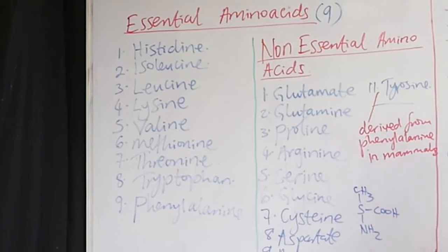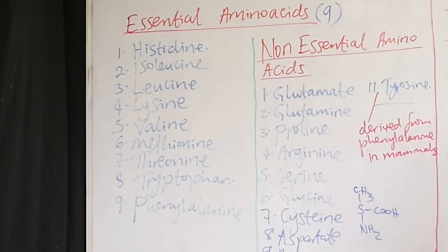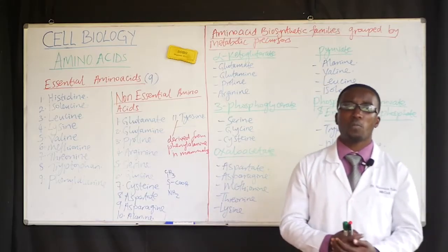We have the tertiary structure, where polypeptide chains come together and fold to form that structure. Lastly, we have the quaternary structure, which is the last level of protein organization, assembled in units. For example, hemoglobin is at the level of the quaternary structure, but all these are levels of protein organization.